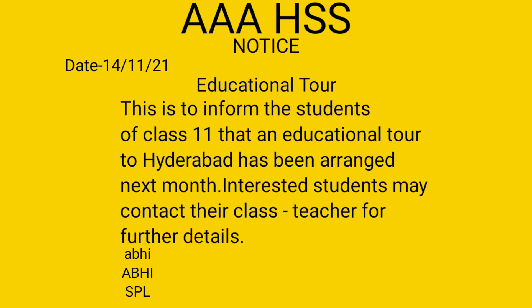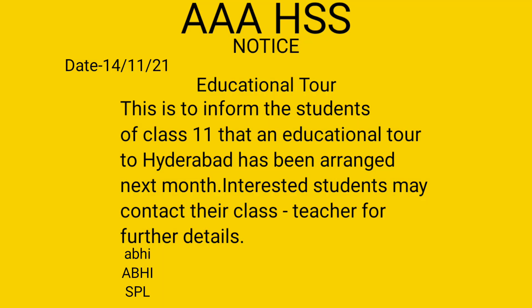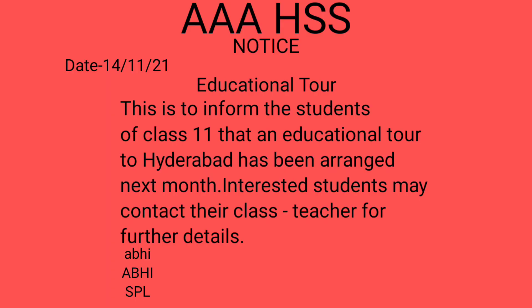First, you will have to write the name of the organization or school in capital letters. As you are going to put up this notice on the notice board of your school, write your school name in the first line in capital letters. Always remember, you are not supposed to mention the original name of your school — just mention it as AAA HSS or BBB HSS. You can use any of the 26 alphabets of your choice to write your school name in capital letters.